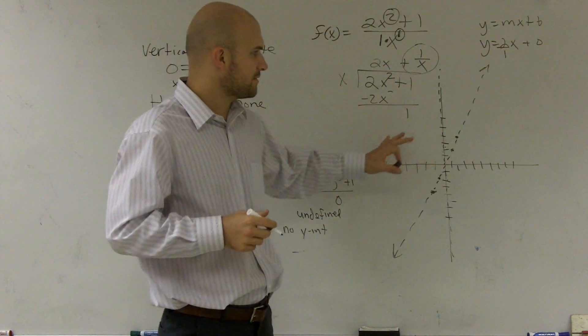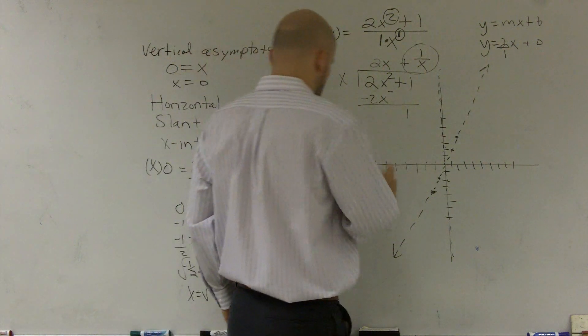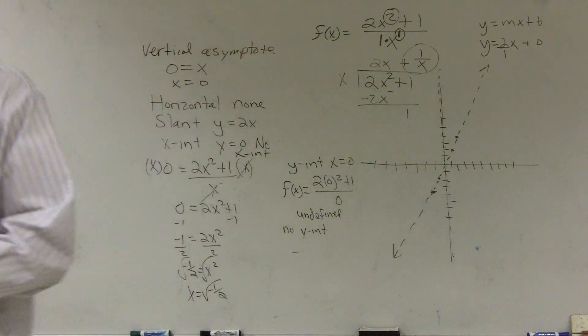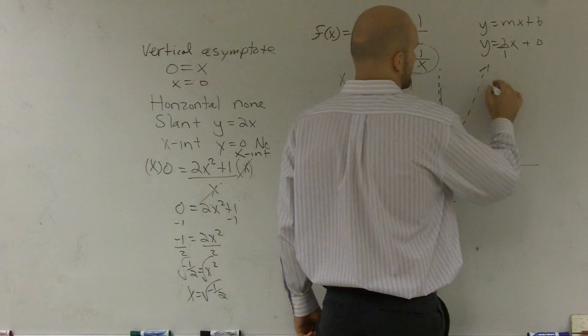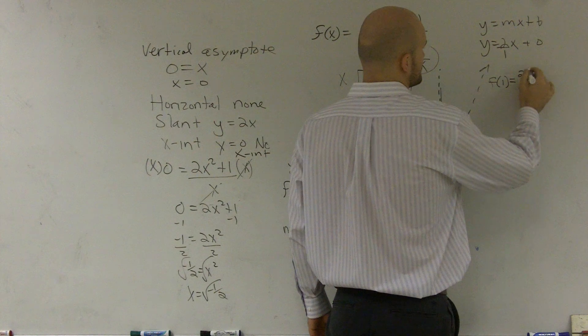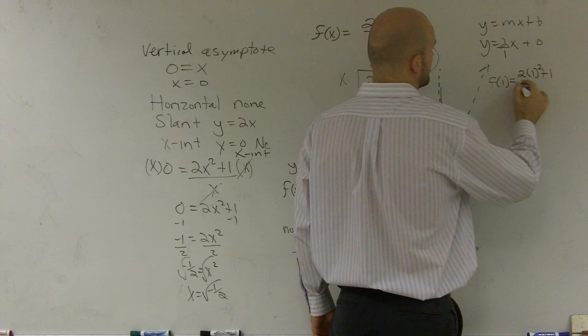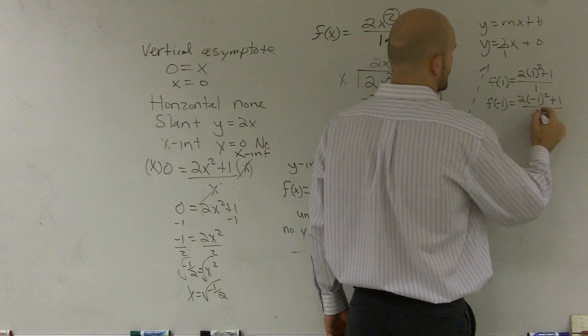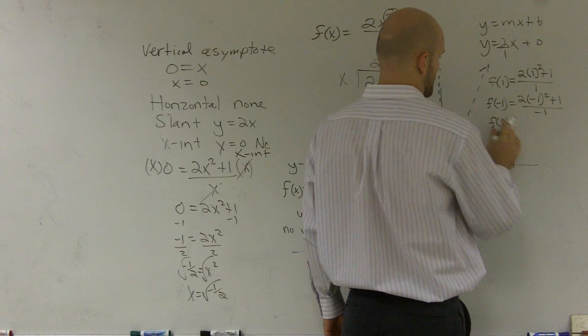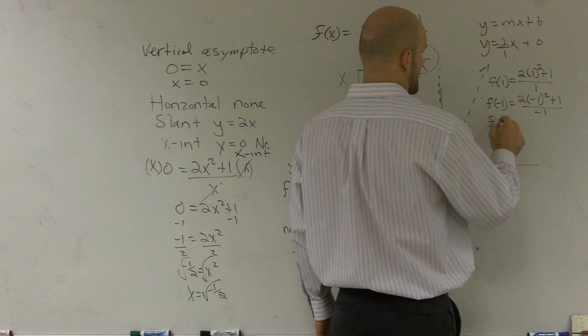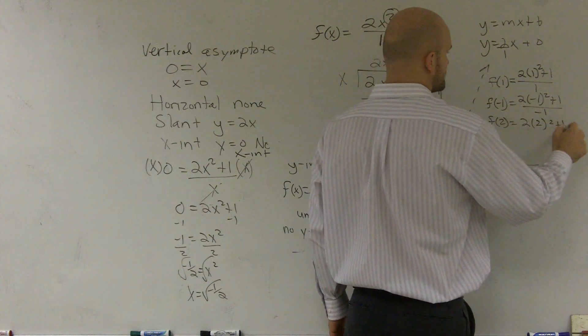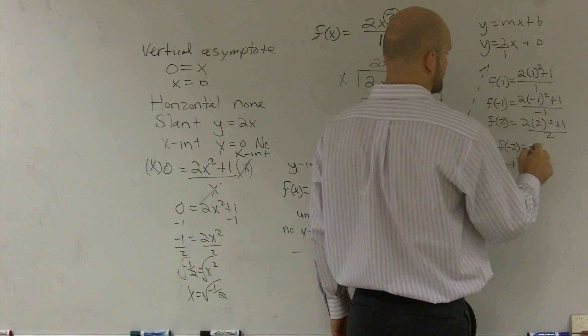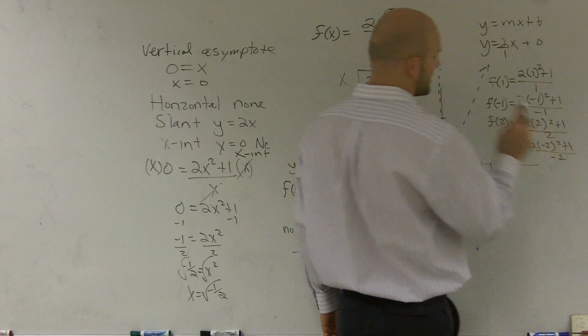So let's go on and see how we're going to figure out the points. Well, remember, we need to evaluate this. So I need to figure out, I'm just going to pick some easy points. Let's say I'll do f of 1 equals, remember, you do 2 times 1 squared plus 1 all over 1. f of negative 1 equals 2 times negative 1 squared plus 1 over negative 1. f of 2 equals 2 times 2 squared plus 1 over 2. f of negative 2 equals 2 times negative 2 squared plus 1 divided by negative 2.